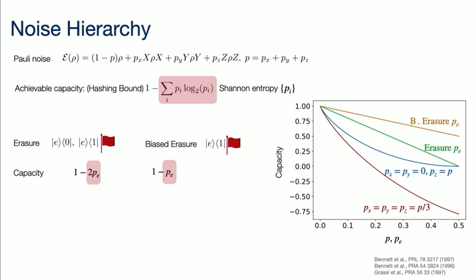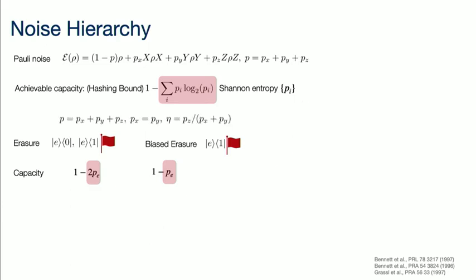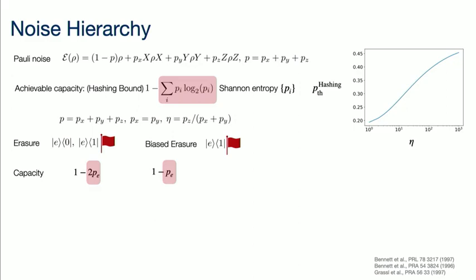When the capacity crosses zero — when the capacity becomes zero — that also gives you the threshold for error correction. Let's plot the threshold assuming biased Pauli noise, where eta is the ratio of Z errors to X and Y errors, and P is the total probability of errors. I can find when the capacity becomes zero; that number P_total is a threshold, and I'm plotting it as a function of eta. Clearly, as eta becomes higher, the threshold increases — higher the bias, higher is the threshold, easier the channel is for you to error correct.